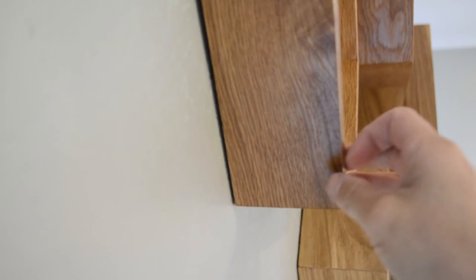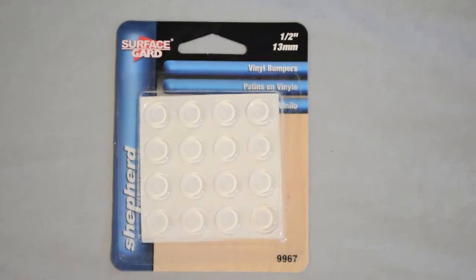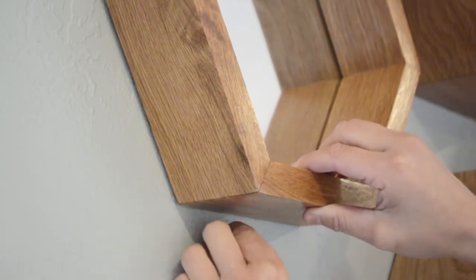Notice here how the top edge sticks out from the wall. This is because the collar of the anchor sits proud of the wall. So for a finishing touch, I'm going to stick these rubber bumpers behind the bottom edge to level it out.